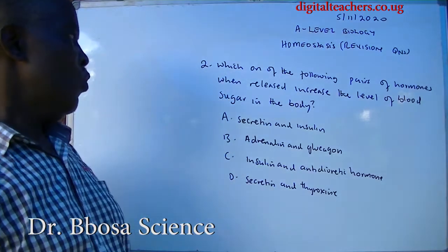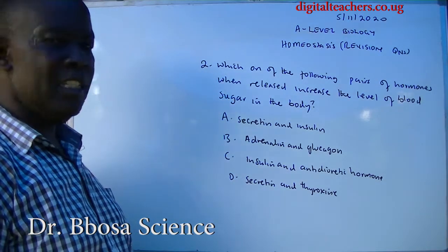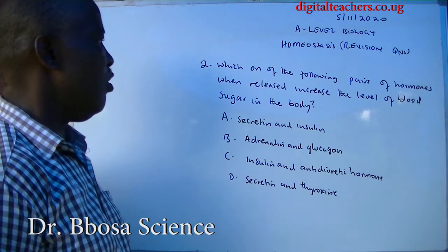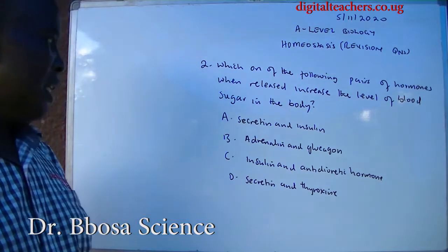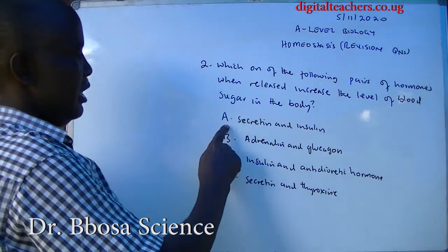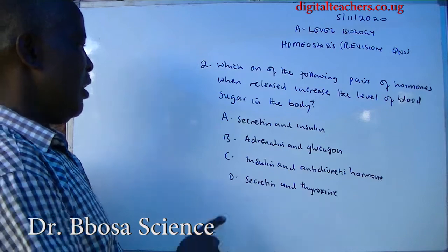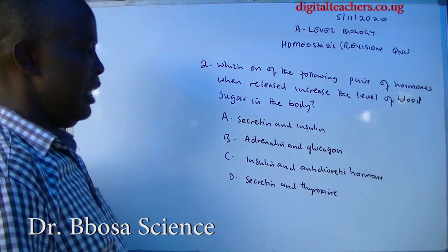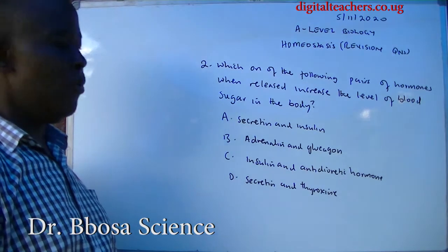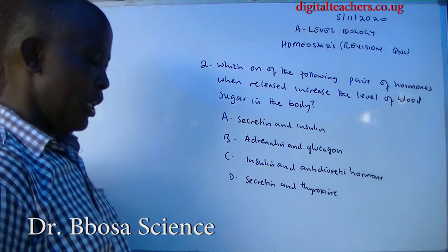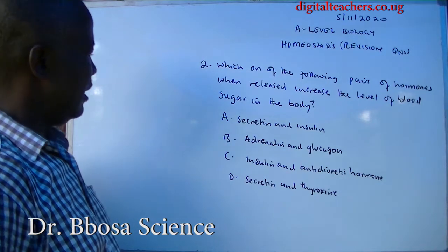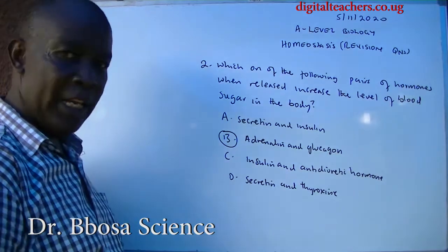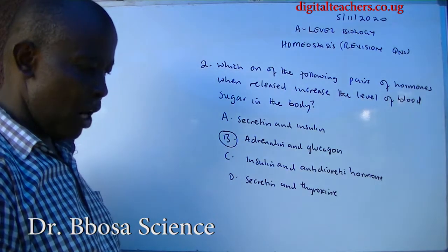Number two: which of the following pairs of hormones, when released, increase the level of blood sugar in the body? A. Secretin and insulin, B. Adrenaline and glucagon, C. Insulin and the antidiuretic hormone, D. Secretin. The answer is B: Adrenaline and glucagon.